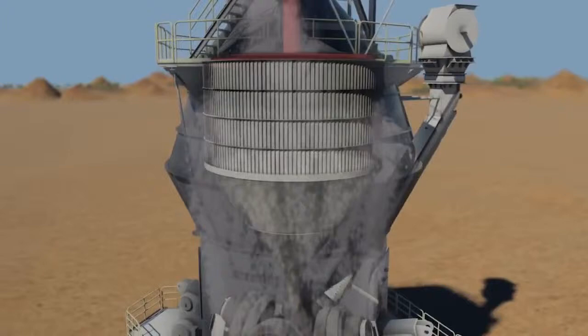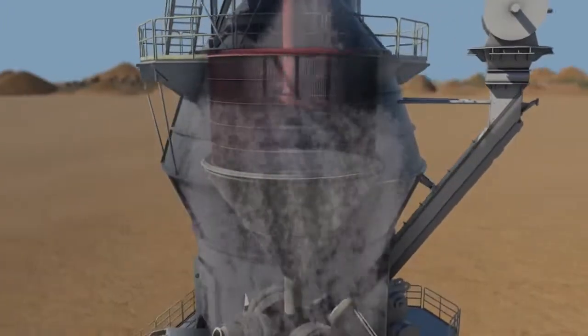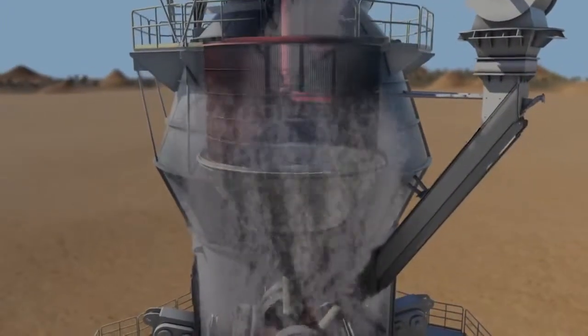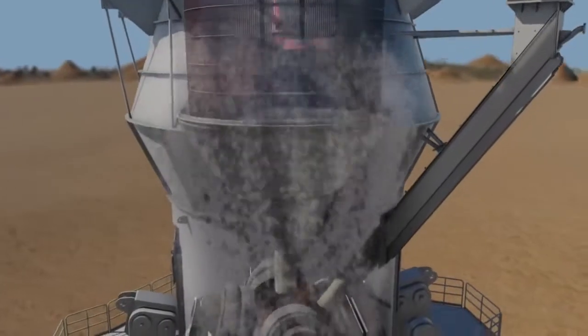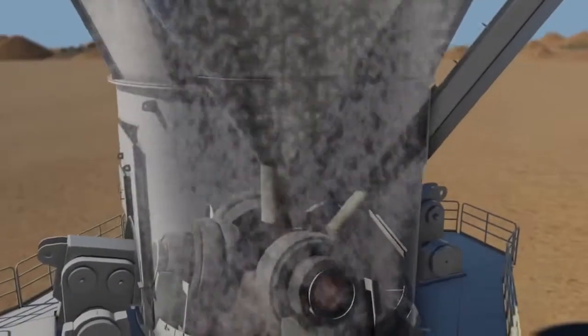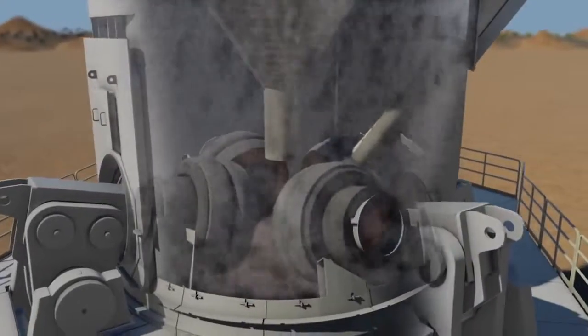Partially ground material passes into the hot gas stream, which also provides drying capability, and moisture in the materials evaporates almost immediately. The separator allows material that has reached the required fineness to leave the mill, while it rejects oversized material and sends it back to the table for further grinding.